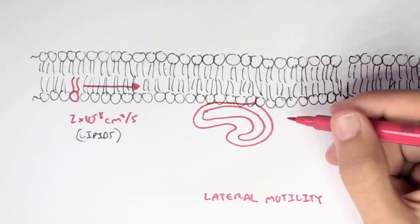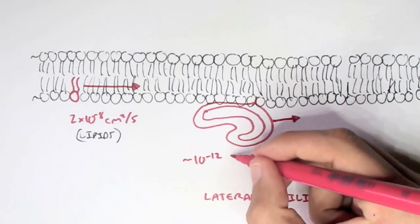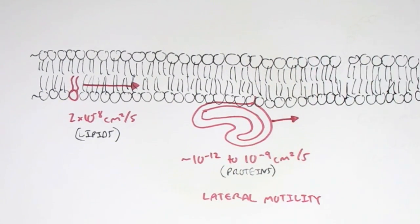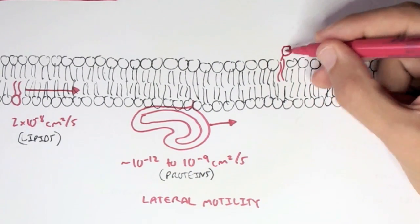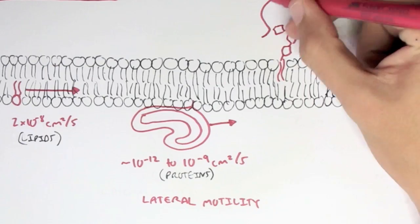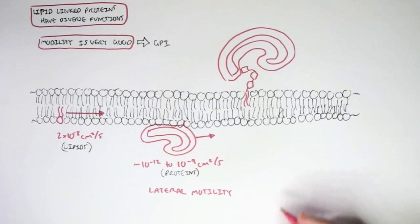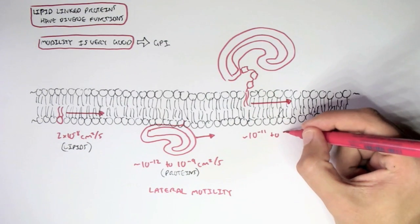If we look at proteins, on the other hand, an example of this can be peripheral proteins, which are attached to the membrane, or actually an integral protein which spans the membrane, it moves at roughly about 10 to the negative 12 to 10 to the negative 9 centimeters squared per second. And this is very, very slow compared to a lipid structure.